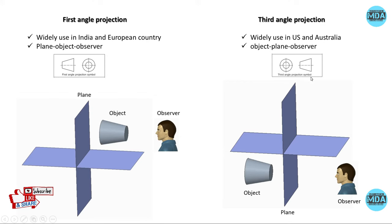You can find this symbol on any drawing. This symbol is mandatory — it defines whether the drawing is prepared by first angle or third angle of projection method. In the first angle method of projection, the object is placed in the first quadrant, and in third angle of projection, the object is placed in the third quadrant.